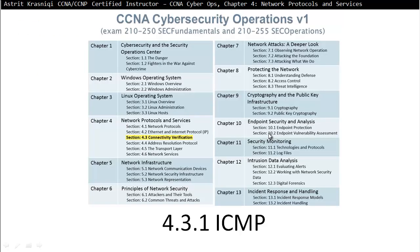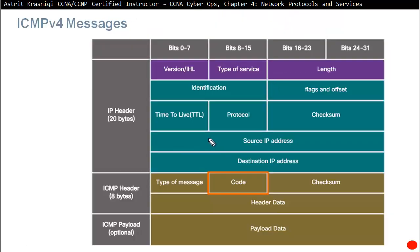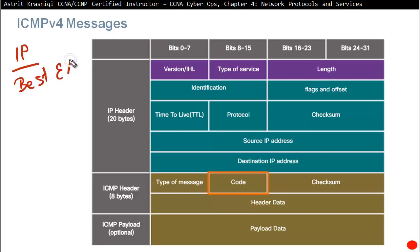4.3.1 ICMP. If you remember from the previous section, the IP protocol on its own is media-independent, best-effort, and connectionless. So best-effort means if any packet goes missing, it doesn't really resend them — it leaves that to other protocols like TCP.